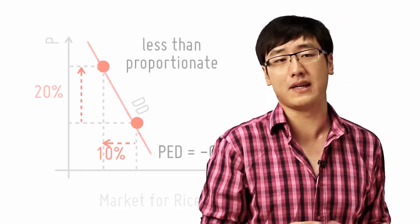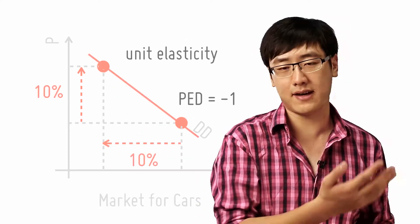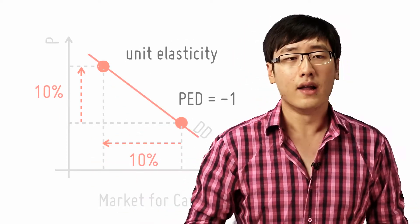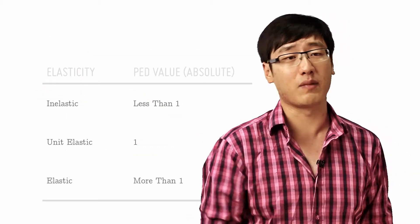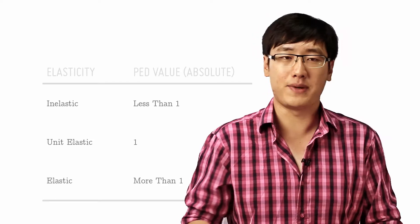Unit elasticity happens when PED equals 1. So change by 10%, quantity demanded changes by 10%. So again, when PED is less than 1, inelastic. When PED is more than 1, elastic.